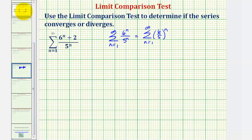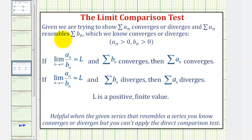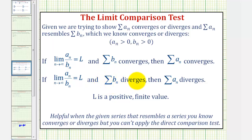To apply the limit comparison test, since we're trying to show the given series — the summation of a sub n — converges or diverges, and our series resembles the summation of b sub n, which in our case is a geometric series that diverges: if the limit as n approaches infinity of a sub n divided by b sub n equals L, where L is positive and finite, then because the summation of b sub n diverges, so does the summation of a sub n. If we were comparing to a known converging series and this limit was positive and finite, then the given series would be convergent.